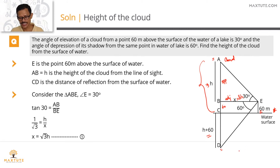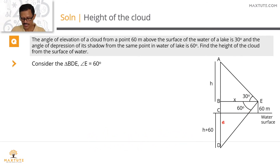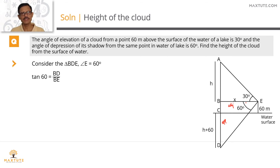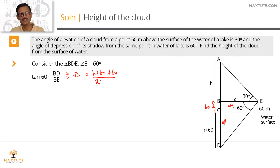Now let's look at right triangle BDE. Angle E equals 60 degrees, BD is the opposite side and BE is the adjacent side. Tan 60 equals BD divided by BE. BD equals BC plus CD, which is 60 plus (H plus 60), divided by BE which equals X, which we established as root 3H.